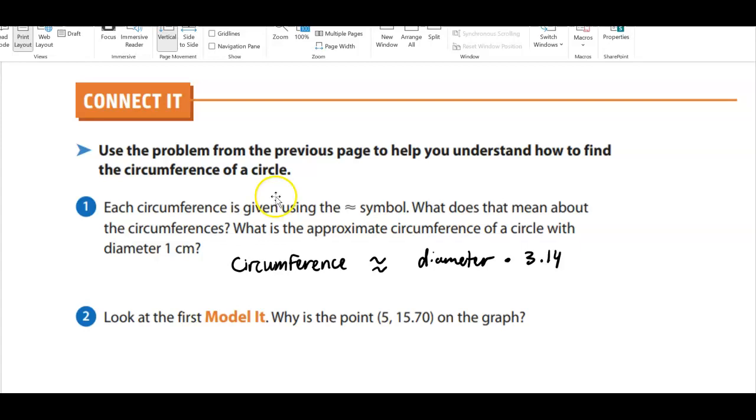So why is the point 5, 15.70 on the graph? Because, remember when you had that circle that was 2.5, that 2.5 was a radius. And we need to find our diameter. So we extended that. We said, oh, this is also 2.5, so this is 5. So that's how we got our 5 there. And that just means if you have a diameter of 5, your circumference will be 15.70, about.